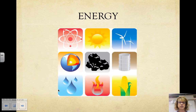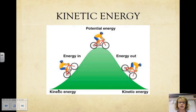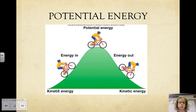Energy is the capacity to perform work. It moves matter in a direction it would not move on its own. All organisms require energy to stay alive. Kinetic energy is the energy that is actually doing work — it is the energy of motion. For example, pedaling a bike. Heat is also a type of kinetic energy, associated with the movement of molecules. Potential energy is stored energy — the capacity to perform work as a result of its location or arrangement. A cyclist at the top of a hill has potential energy. The electrons of an atom have potential energy due to their positions in the electron shells and their distance from the nucleus.